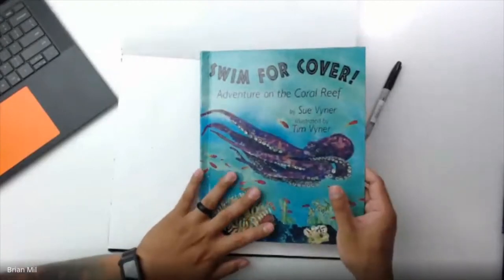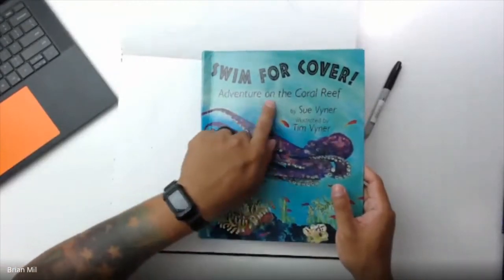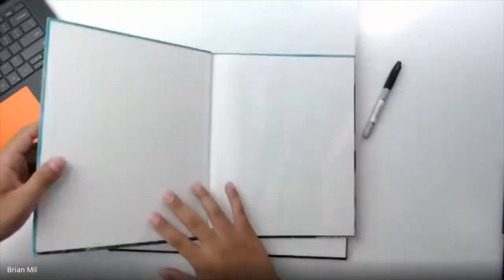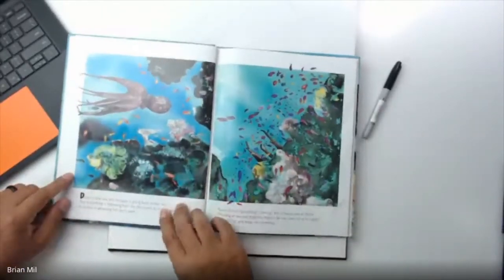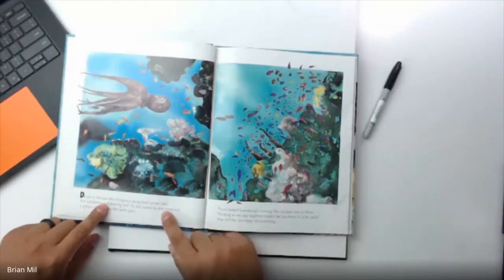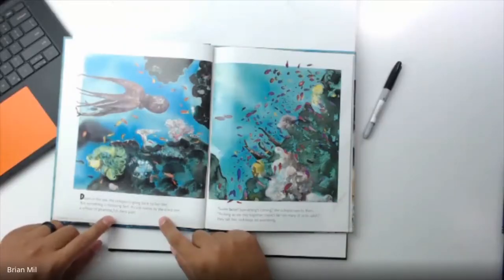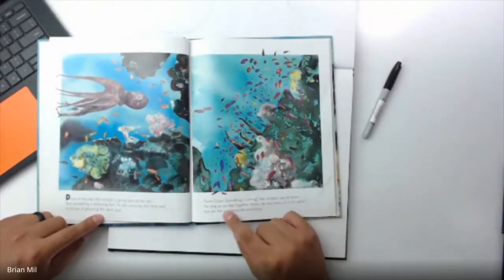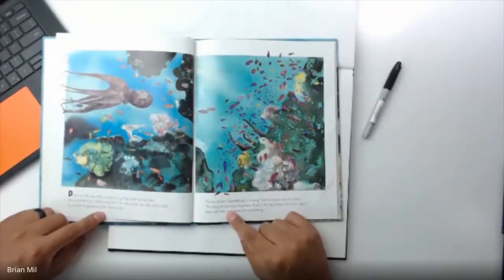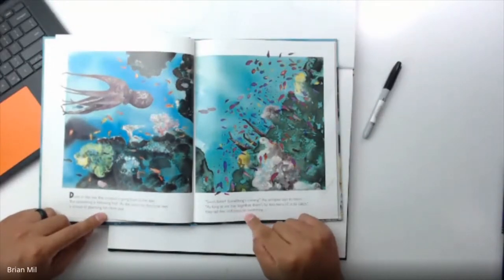I'm going to give you guys this quick book. It's called Swim for Cover, Adventure on the Coral Reef. So here we go. Down in the sea, the octopus is going back to her den, but something follows her. She swims by the coral reef with a small fish swimming as part of her. Swim faster, something's coming! The octopus says to them. As long as we stay together, there's far too many of us to catch, they tell her, and keep on swimming.